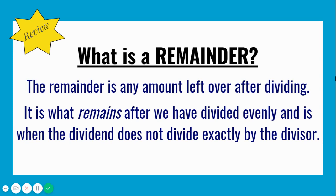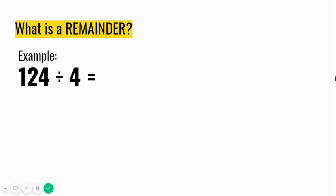What is a remainder? A remainder is any amount left over after dividing. It's what remains after we have divided evenly and is when the dividend does not divide exactly by the divisor.